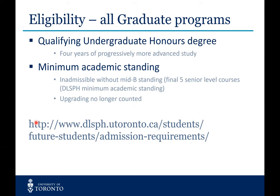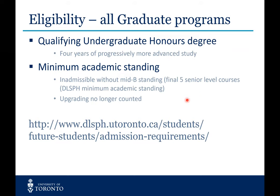In terms of eligibility with respect to your undergraduate training, this is a School of Graduate Studies requirement for all graduate programs at the University of Toronto — not just a Dalla Lana requirement. You must have an undergraduate honors degree, a four-year program of progressively more advanced study. When looking at minimum academic standing, we focus on your five most recent senior-level courses, and in these courses you need to have at least a mid-B standing. We want to see that these are 300 to 400 level courses — they really need to be advanced level courses.